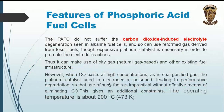The phosphoric acid fuel cell does not suffer the carbon dioxide-induced electrolyte degradation seen in alkaline fuel cells, and so can use reformed gas derived from fossil fuels. Though expensive platinum catalyst is necessary to promote the electrode reactions, it can make use of city gas — natural gas-based — and other existing fuel infrastructure.